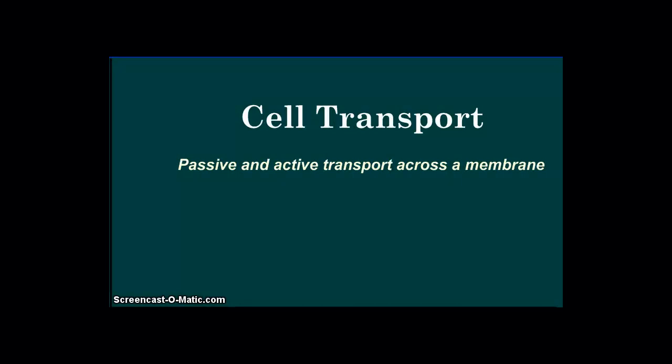Welcome back. Today's topic is cellular transport. We'll be specifically talking about the two kinds of cell transport and comparing them, as well as introducing you to how they work. Passive and active transport are the two ways that a cell moves things across a membrane. This is important for the cell because this is the way that the cell maintains balance, otherwise known as homeostasis.